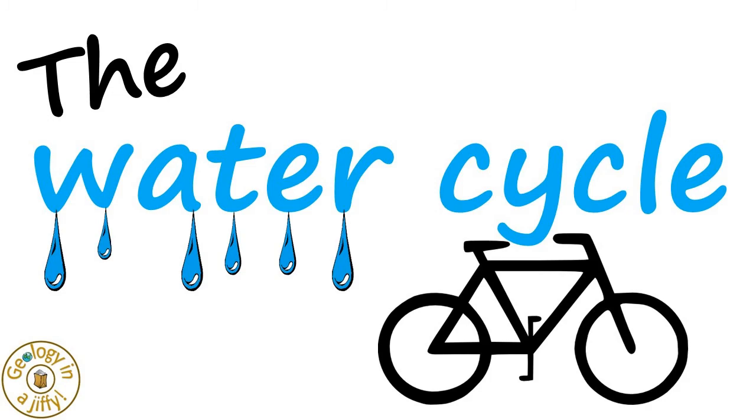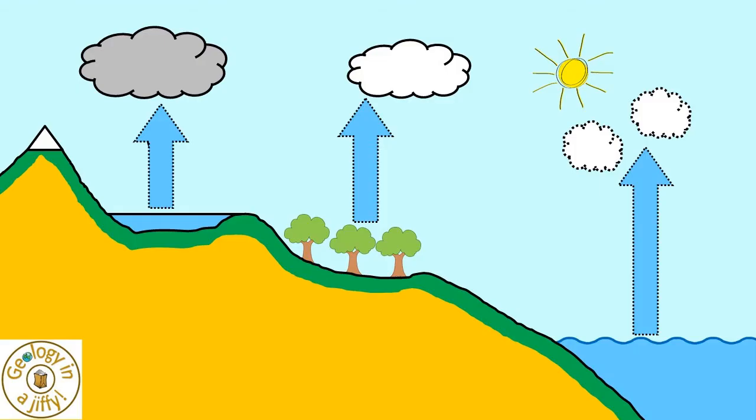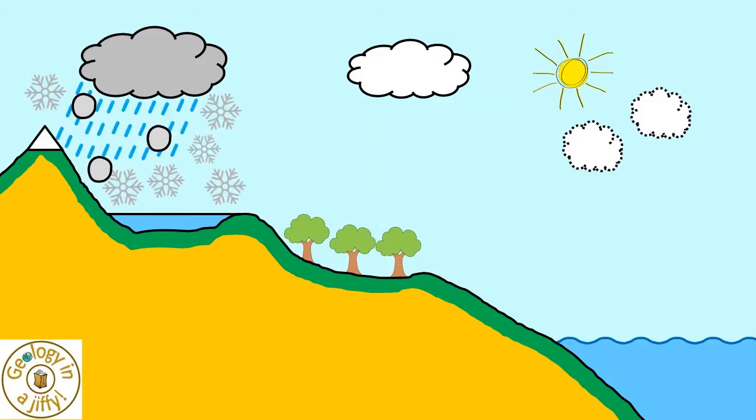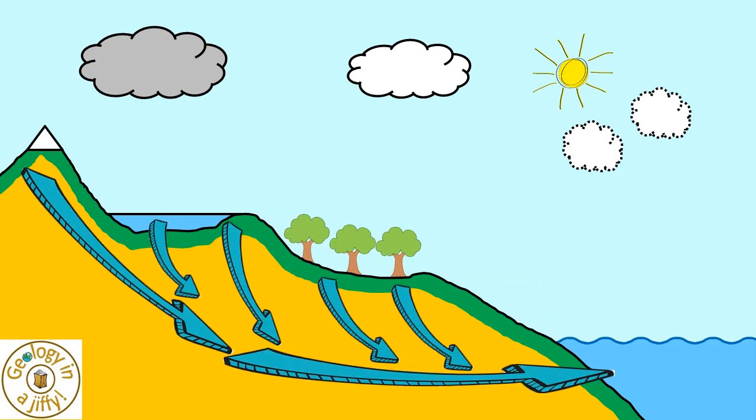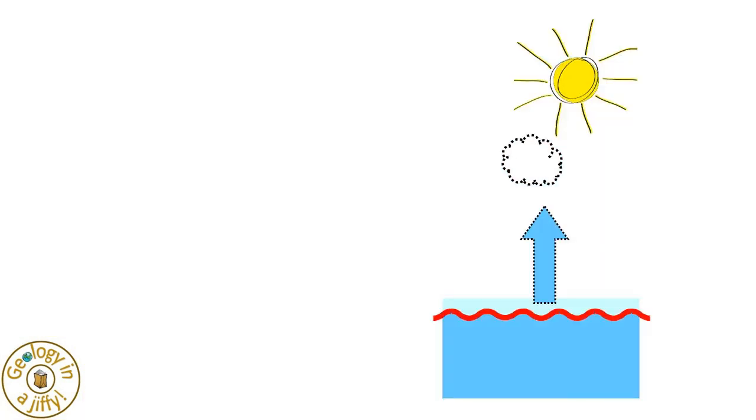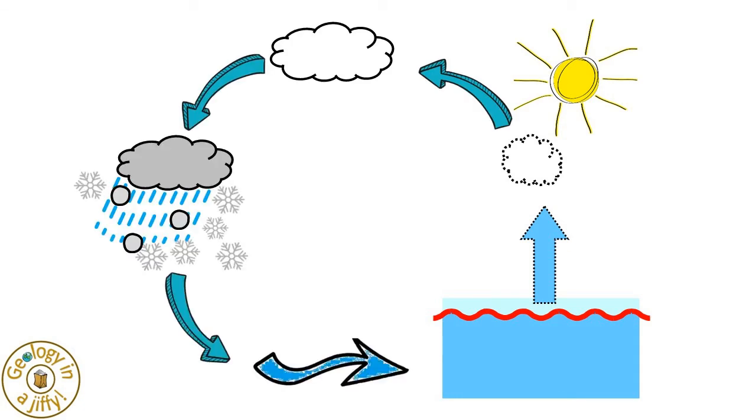The water cycle: evaporation, condensation, surface flow, ground flow, evaporation, condensation, precipitation, surface and ground flow.